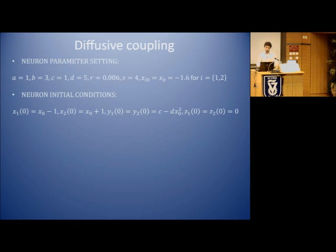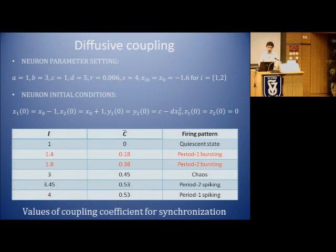These are the neuron settings and the neuron initial conditions for diffusive coupling. This is the table that shows the values of the coupling coefficient for having synchronization. We are focusing in this presentation only on these two red rows, so we consider only period-one bursting and period-two bursting. What happens with memristive coupling?